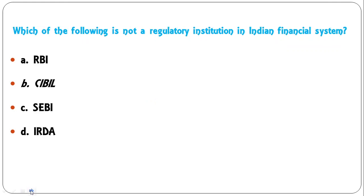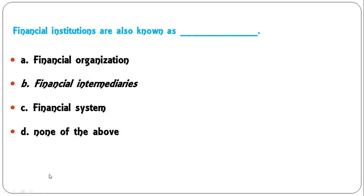Next: Which of the following is not a regulatory institution in the Indian financial system? Options: RBI, CIBIL, SEBI, IRDA. The correct answer is CIBIL, because RBI is the apex banking institution, SEBI is the securities regulatory authority, IRDA is the insurance sector regulatory authority, but CIBIL is not a regulatory authority. So B is the correct answer.